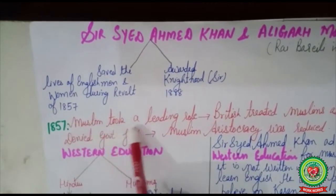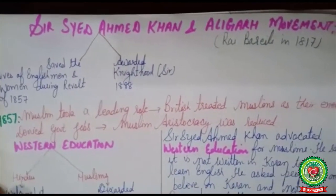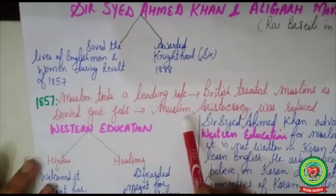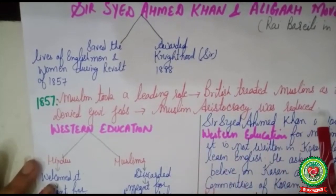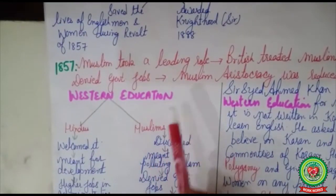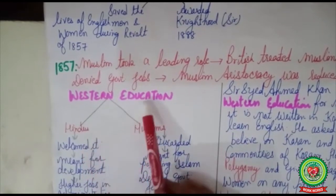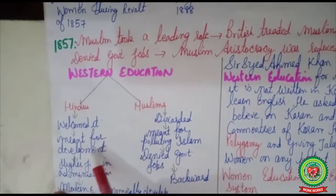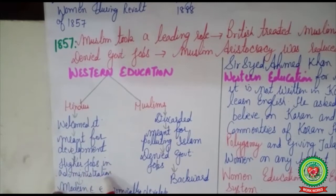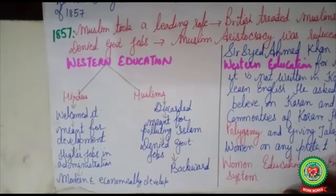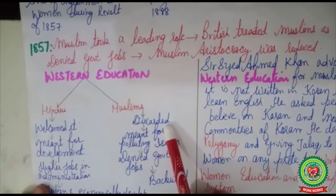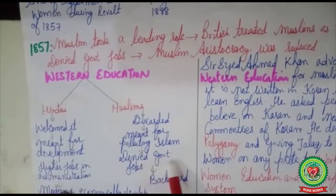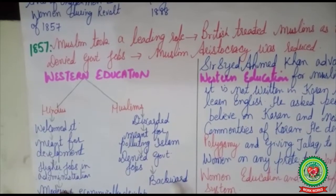In the 1857 revolt, Muslims took a leading role, so the British treated Muslims as their enemy. As a result, government jobs were denied to the Muslim community and Muslim aristocracy — zamindars, nobles, and the rich class — declined in society. When Western education was introduced by the British, Hindus and Muslims reacted differently. Hindus welcomed Western education, adopted it, got higher administrative jobs, and became modern and economically developed. Whereas Muslims discarded Western education, believing it would pollute their religion Islam, so they were denied government jobs and became socially and economically backward compared to Hindu society.